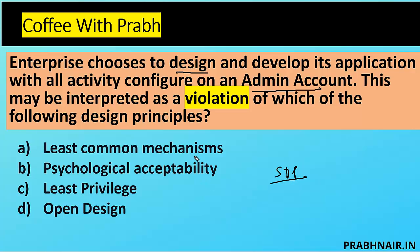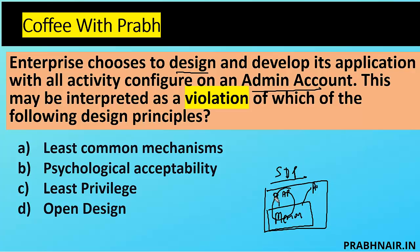We have four options. First is least common mechanism, which basically means objects should not be shared with others. It is used to prevent buffer overflow and race conditions. For example, if we have memory that is dedicatedly allocated for one application, that memory will not be allocated to other applications. Access resources should not be shared; sharing provides a channel along which information can be transmitted, so sharing should be minimized.